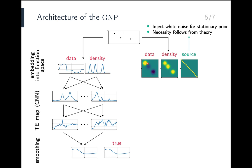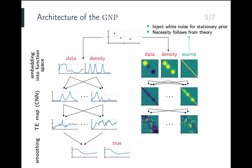In the next step, these heat maps — the functional representation of the data for the kernel map — are also transformed by a translation equivariant map, implemented by a CNN now using 2D convolutions. Finally, the output of the CNN is combined to produce the model's estimate of the kernel function. Again, comparing to the true kernel function, there's hardly any difference. The GNP really nails the Matern 5.2 GP.